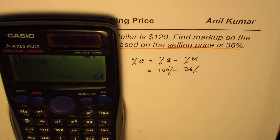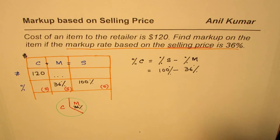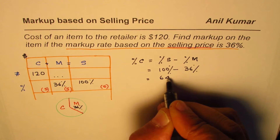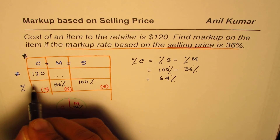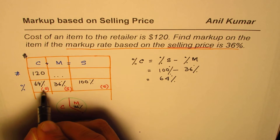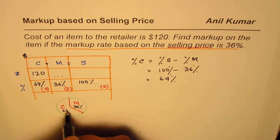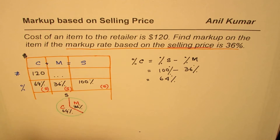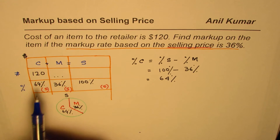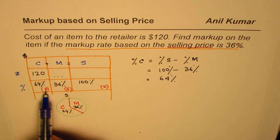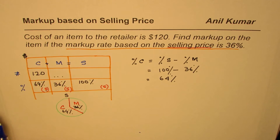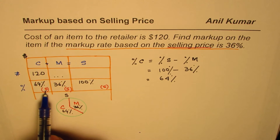So we calculate: 100 percent minus 36 percent equals 64 percent. This 64 percent is of sales — our base is sales. Now, 64 percent of sales equals $120.